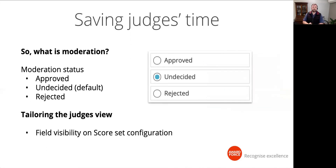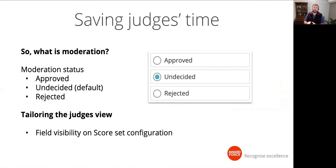What is moderation? This is something program managers are usually quite delighted to learn about. There are three types of moderation: approved, undecided, and rejected. By default, all entries are undecided, which has no real effect on entries. Let's look at how we can use tools available to moderate entries in preparation for judging — with the goal of saving our judges time by removing entries that don't meet the grade.